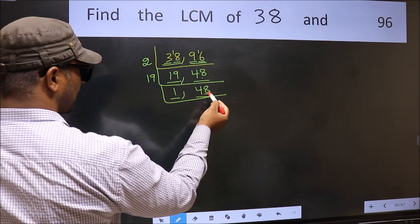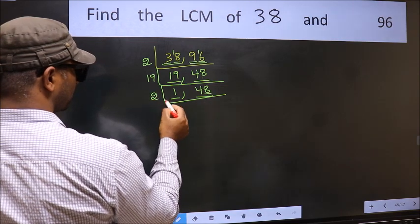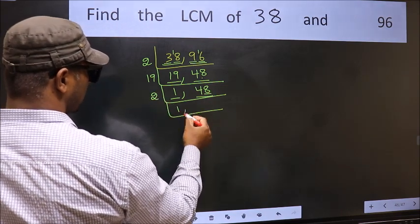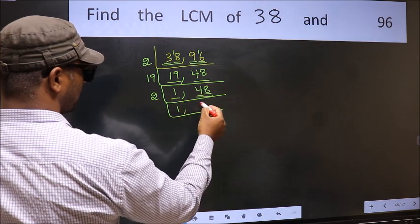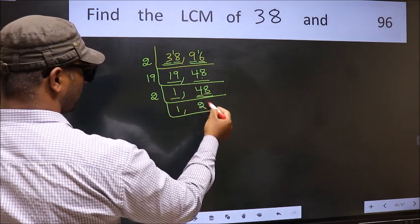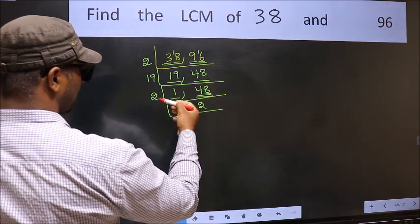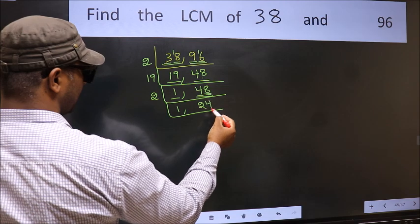Now we have 1 here, so focus on the other number, 48. The last digit is 8, which is even, so take 2. The first digit is 4; when do we get 4 in the 2 table? 2 twos = 4. The other part is 8; when do we get 8 in the 2 table? 2 fours = 8. So 48 ÷ 2 = 24.